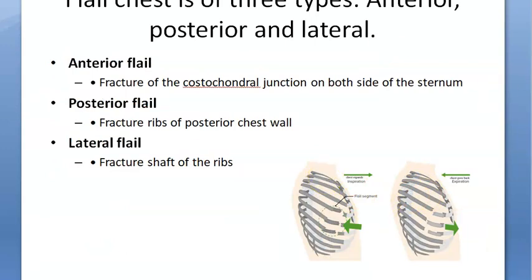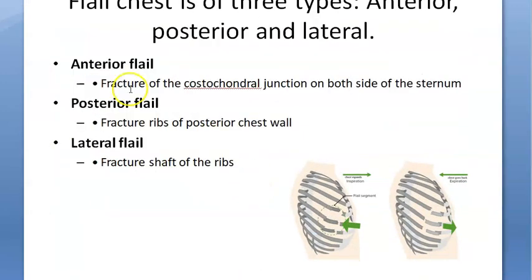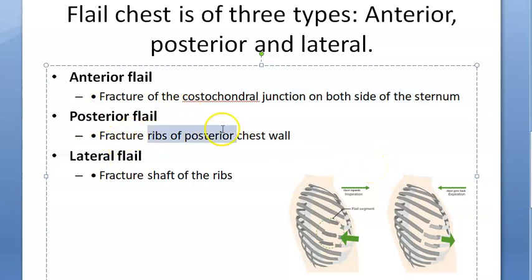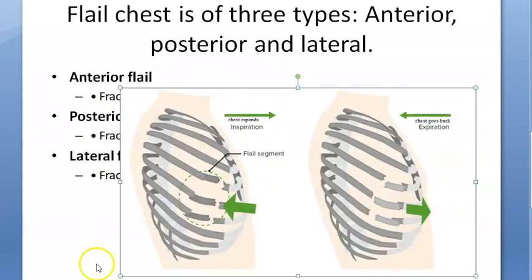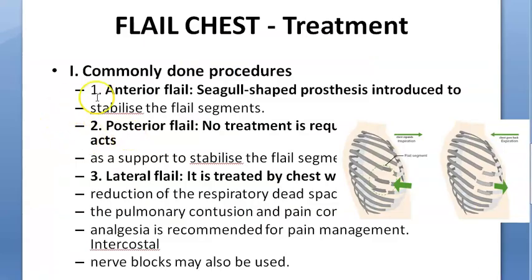There are three types of flail chest: anterior, posterior, and lateral. Anterior involves fracture of the costochondral junction on both sides of the sternum. Posterior involves fracture of ribs of the posterior chest wall. Lateral involves fracture of the shaft of the ribs. So looking at a person from the front: anterior is on both sides of the sternum, posterior is at the back, and lateral is on the sides.